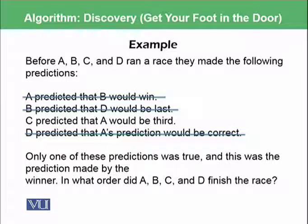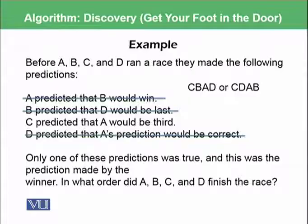we are left with only one statement that is C predicted that A would be third. And we also know that C is the winner because the prediction made by the winner is actually the correct one as stated by the question. So this means now we have two possibilities.